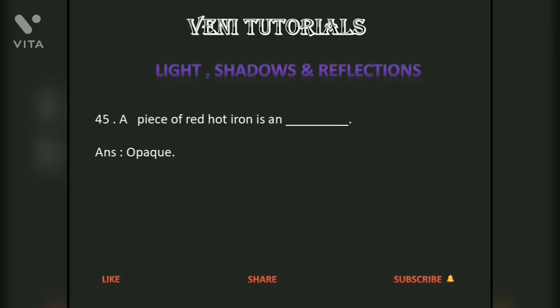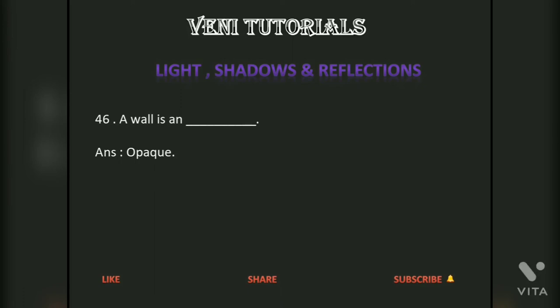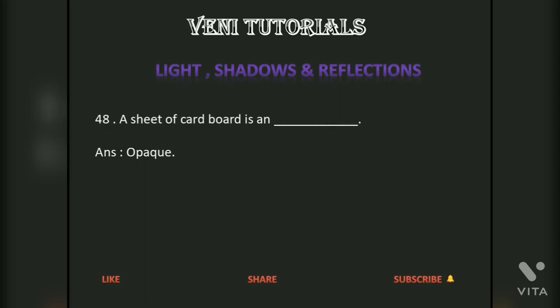A wall is dash — answer: opaque. A sheet of carbon paper is dash — answer: opaque. A sheet of cardboard is dash — answer: opaque.